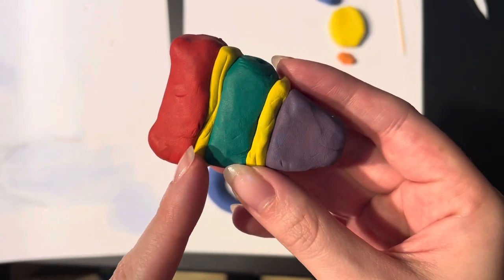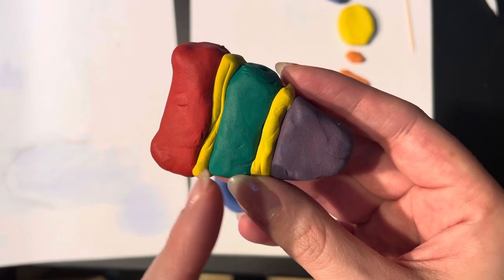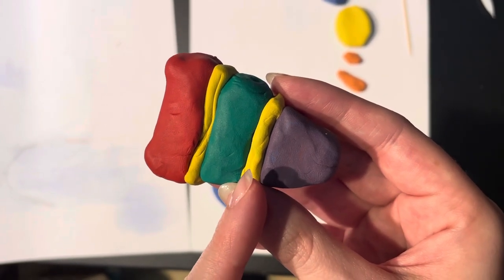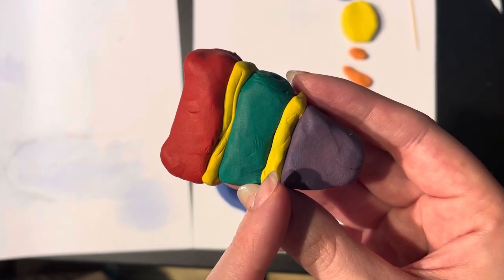The lateral medullary lamina separates the putamen and the external globus pallidus. And the medial medullary lamina separates the external and internal segments of the globus pallidus.